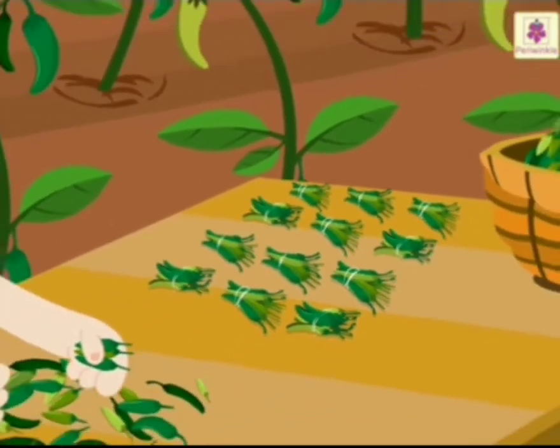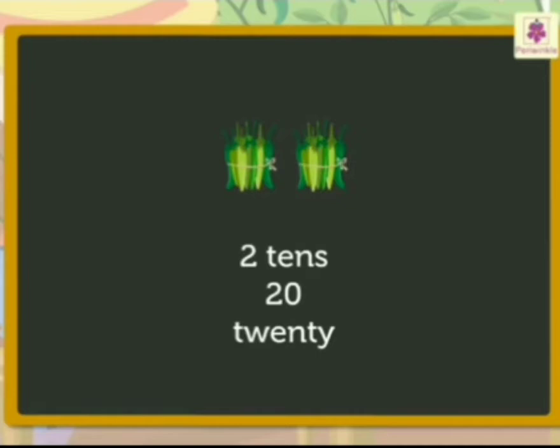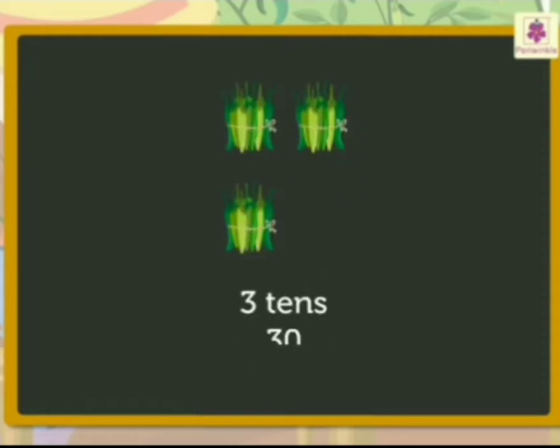So many bundles are kept there. Now we'll understand what is one ten. One ten means a group of ten. Two groups of ten, or two tens, become twenty. Three tens become thirty.